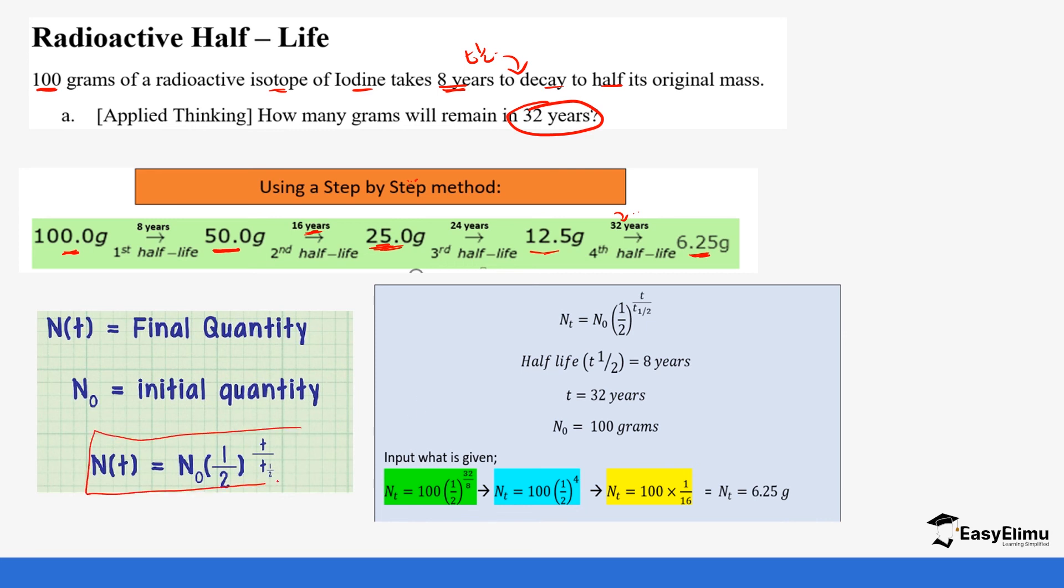Alternatively you can use the formula. This is the formula for calculating half-life: N(t) = N₀(½)^(t/t½). We have the final quantity, the initial quantity, and the time of half-life. In our question, the initial quantity is 100 grams and the half-life is eight years and t is 32 years. When you put that in your equation and divide 32 by 8 you get 4. When you do the calculation that is 1 over 16 and that gives you 6.25. Either method you use, you're still going to get the same value.